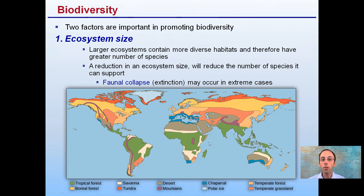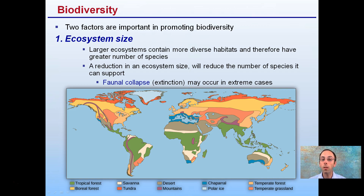There are two main factors important for promoting biodiversity. The first is ecosystem size — larger ecosystems contain more diverse habitats and therefore a greater number of species. Simply by having a larger area, we can say it's going to contain more habitats and therefore more species. A reduction in ecosystem size will reduce the number of species it can support, and ultimately this could lead to extinction.